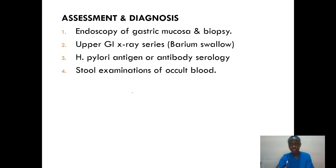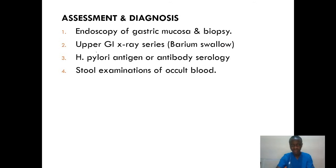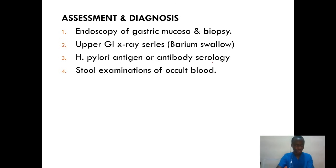Assessment: what can we do to come up with a proper diagnosis? One, we can do endoscopy where a camera is placed inside the GI system to visualize how the mucosa is. Then we can do upper GI X-ray series, which is the barium swallow. Then H. pylori antigen or antibody serology. We can also look at stool examination for occult blood, because we said the mucosa can become edematous and might bleed.